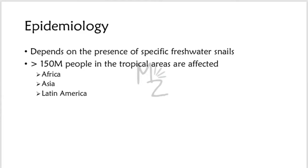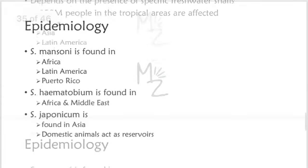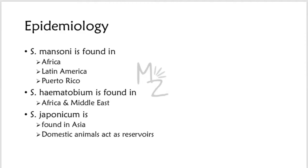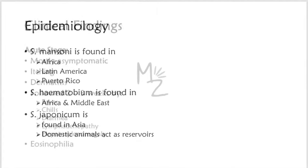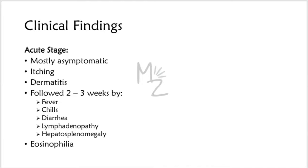S. mansoni is found in Africa and Latin America including Puerto Rico, whereas S. haematobium is found in Africa and the Middle East. S. japonicum is found only in Asia and is the only species for which domestic animals — for example water buffalo and pigs — act as important reservoirs.